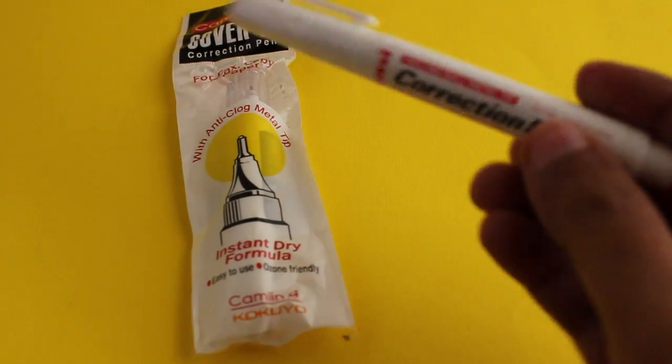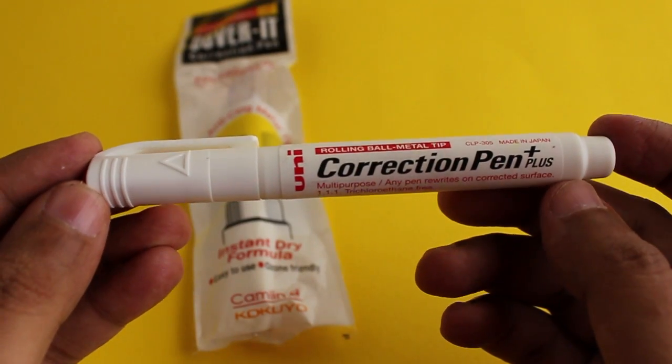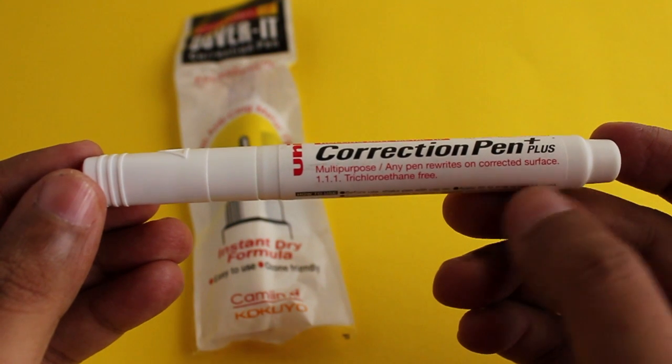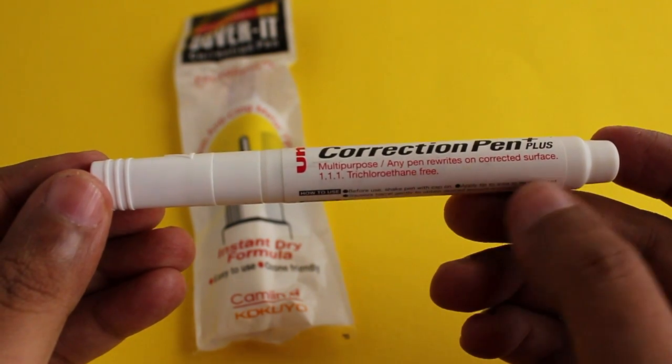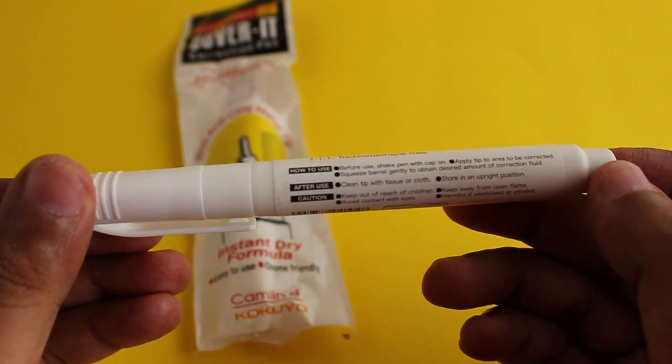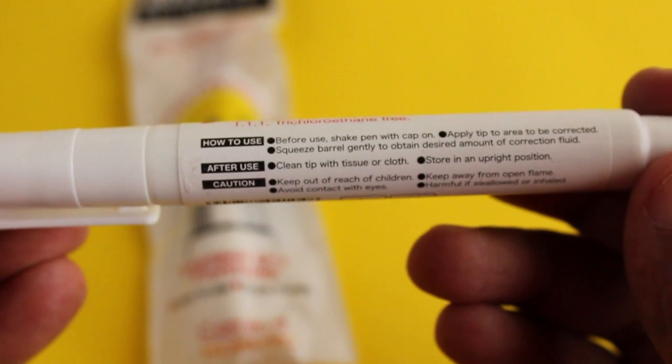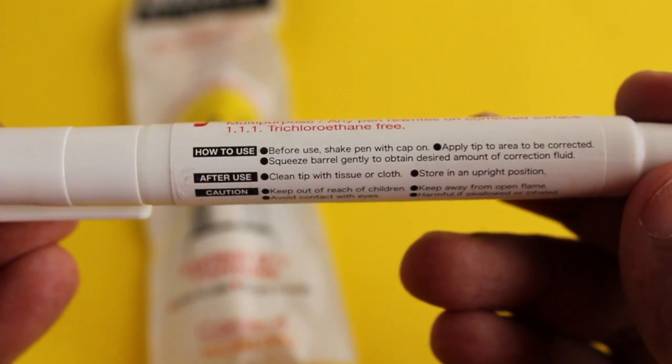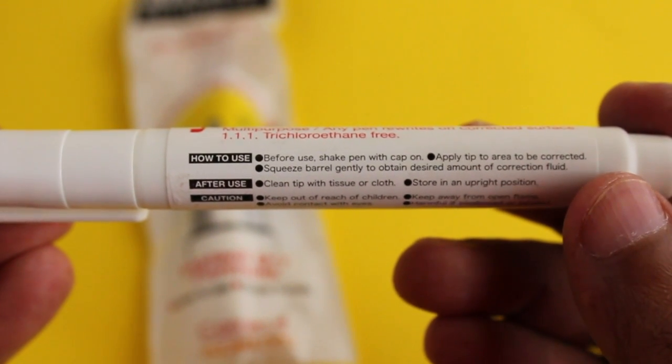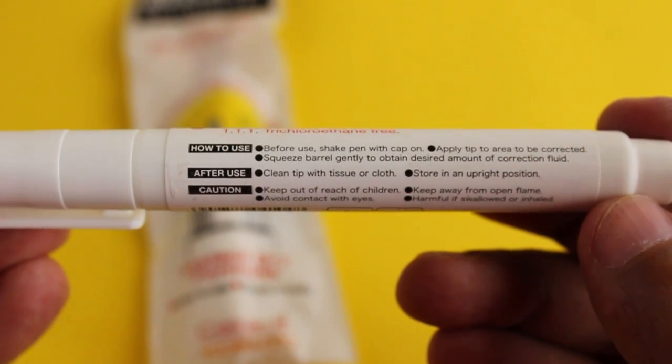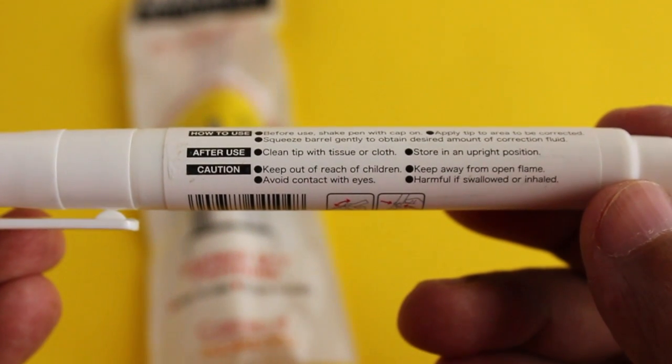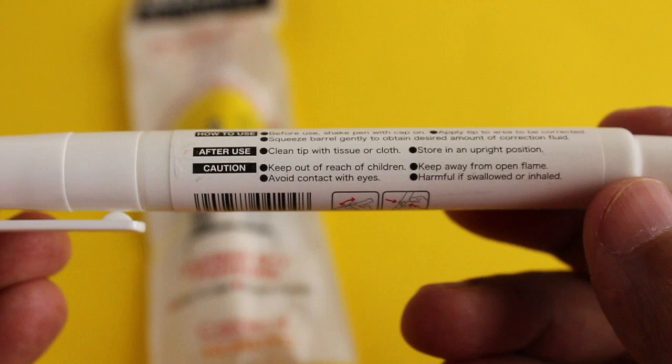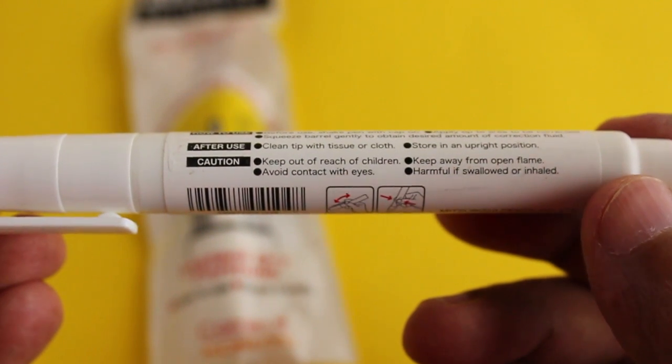Let's take a look at this cheap and costly series. This time we are taking a look at correction pens. This one is the costly version from a company called Uni. It costs around 100 rupees or around 2 dollars. These are some of the instructions on how to use it.